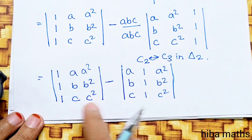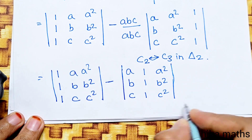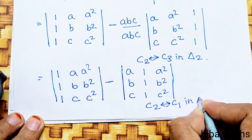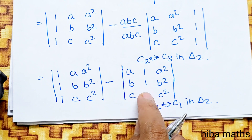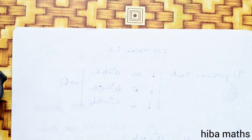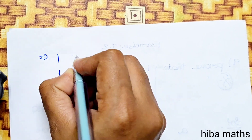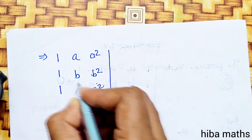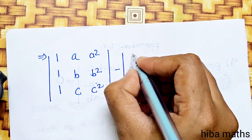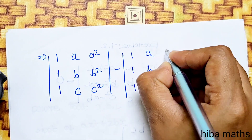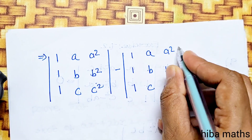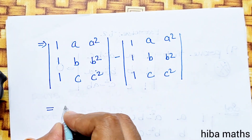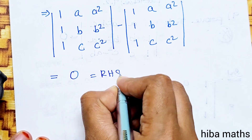Now we are going to compare this: 1, 1, 1 in the first column, A, B, C in the second column. C2 interchanges with C1 in determinant 2. The result is 1, 1, 1; A, B, C; A², B², C² minus the same determinant. So it is equal to zero — minus 1 times the same gives the RHS.